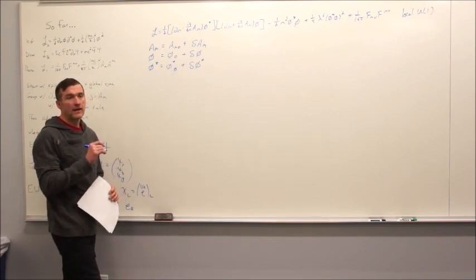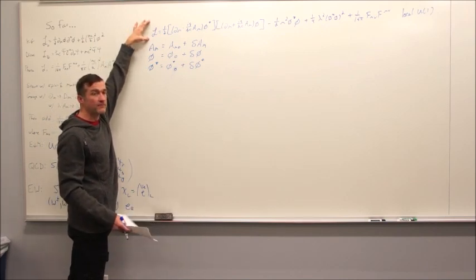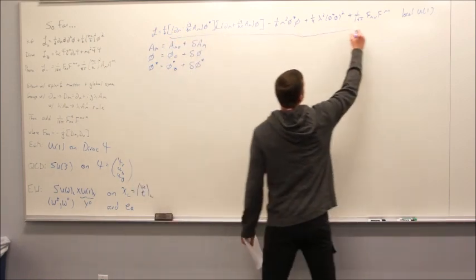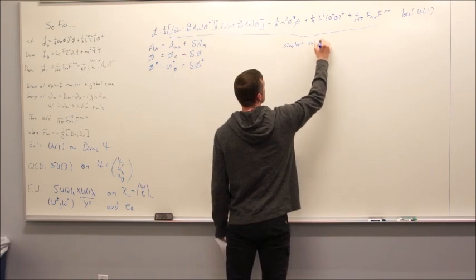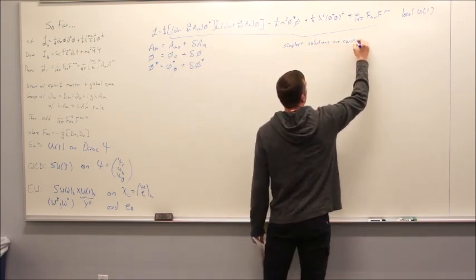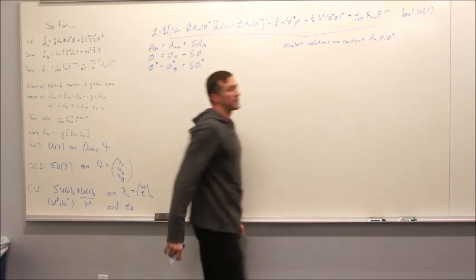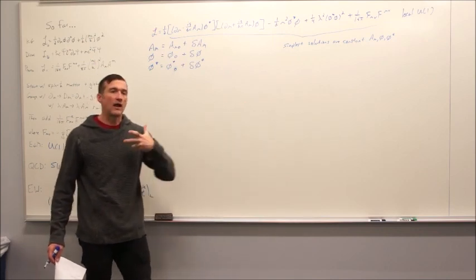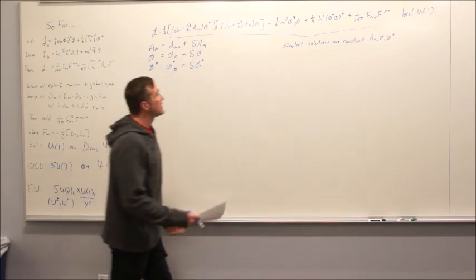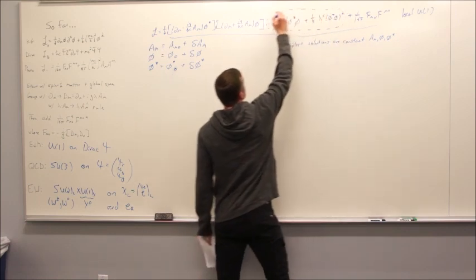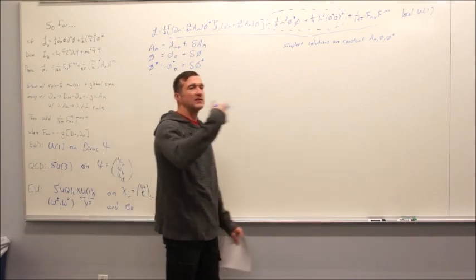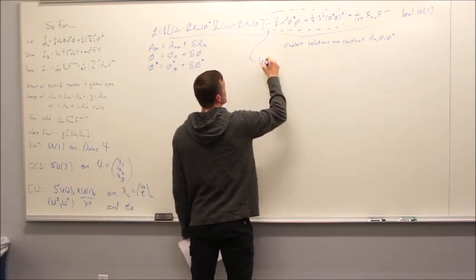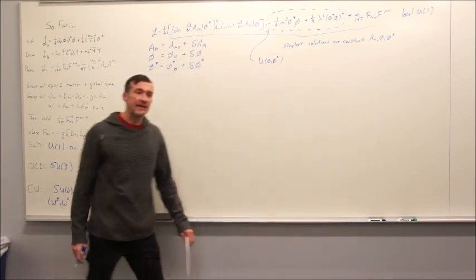Now we're just going to cheat and look for the simplest possible solutions. If I look for constant field configurations, all of the derivative terms automatically vanish. So really all I'm doing is extremizing a potential. To find the potential, just focus on the non-derivative terms. So finding the equation of motion and solving it, if you're happy looking for constant solutions, boils down to extremizing that potential function U(φ, φ*).